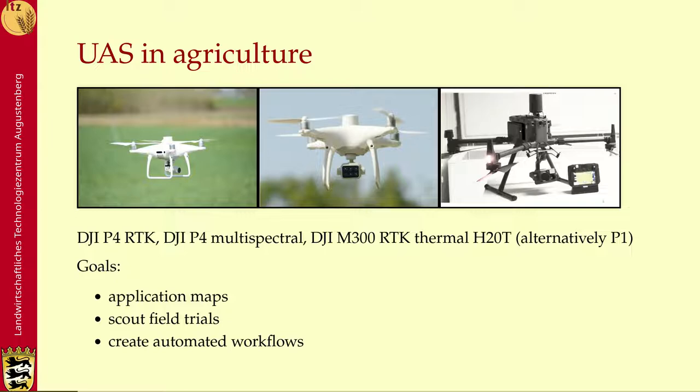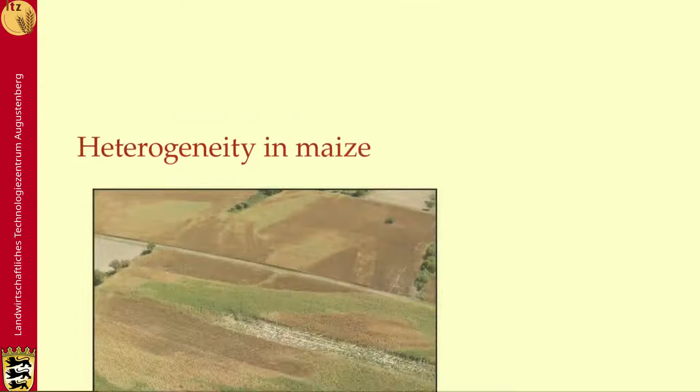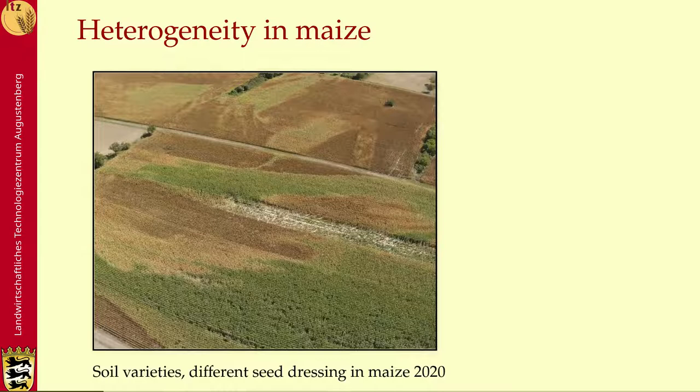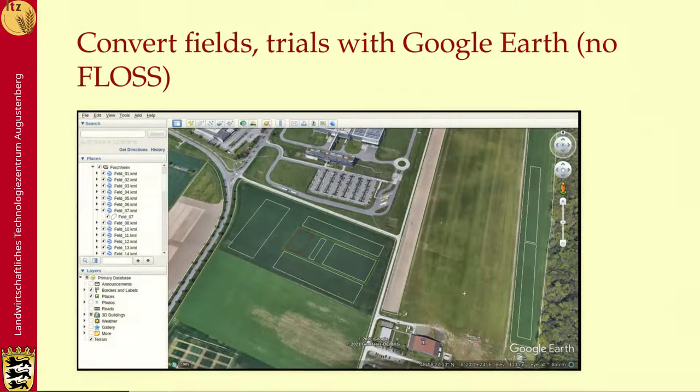Our goals here are to create application maps, to scout field trials, and to create automated workflows. The heterogeneity we see in the maize field is due to soil differences and also seed dressing — the strip in the middle was taken off by the birds.